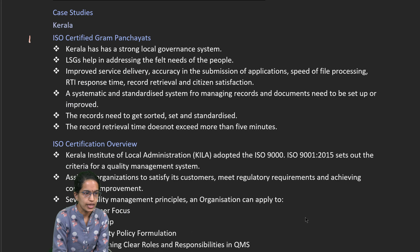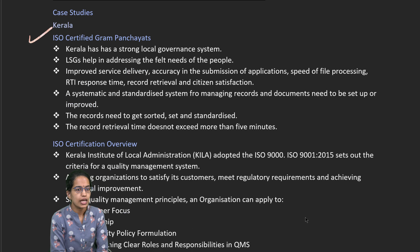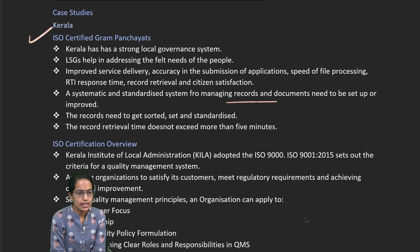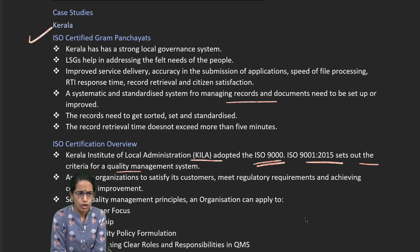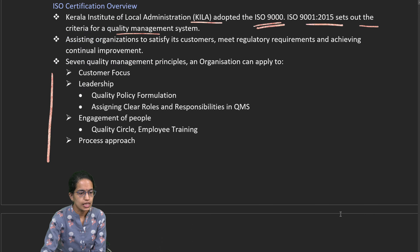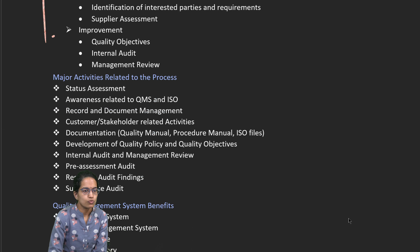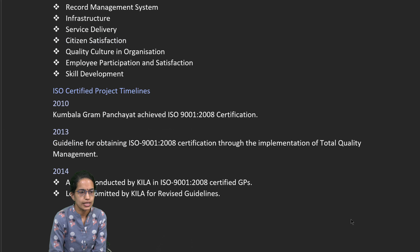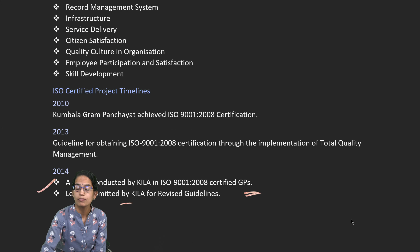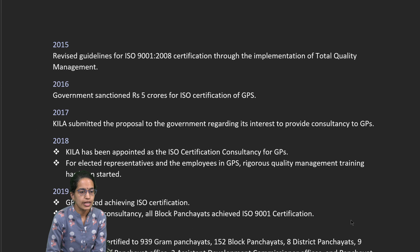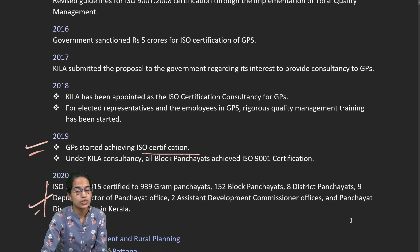A case study from Kerala shows ISO-certified Gram Panchayats with standardized systems for managing records and documents. This ISO certification was adopted by the Kerala Institute of Local Administration under ISO 9001:2015, which talks about the Quality Management System under seven basic principles. In 2014 a study was conducted for certified Gram Panchayats, and by 2019 the ISO certificate was achieved and various panchayats were brought into it.